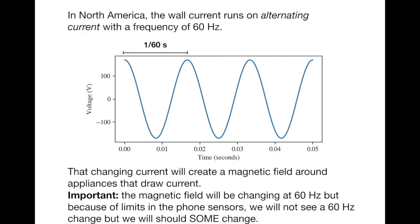In North America, the wall current runs on alternating current where the voltage oscillates up and down with a frequency of 60 hertz. This shows a typical graph of the voltage in an electrical line. The period of the wave here is 1/60th of a second. This shows the voltage on the vertical axis and time in the horizontal axis.